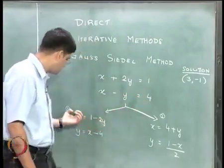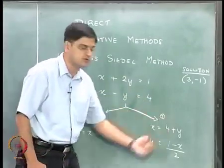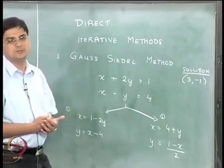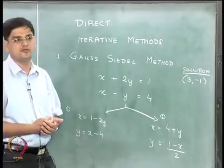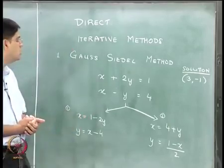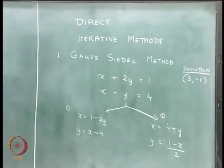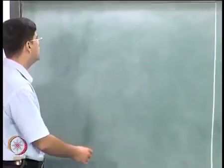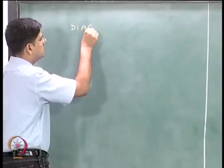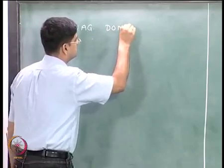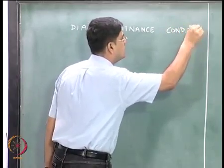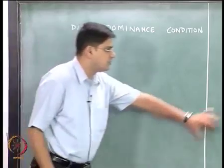The question is when do we use methodology number 1 and when do we use methodology number 2. We will not prove this for now — that proof is kept for a later time, perhaps in the third or fourth lecture in module 4, when we talk about non-linear systems. What is required to ensure the Gauss-Seidel method converges when applied to these equations is what is known as a diagonal dominance condition.